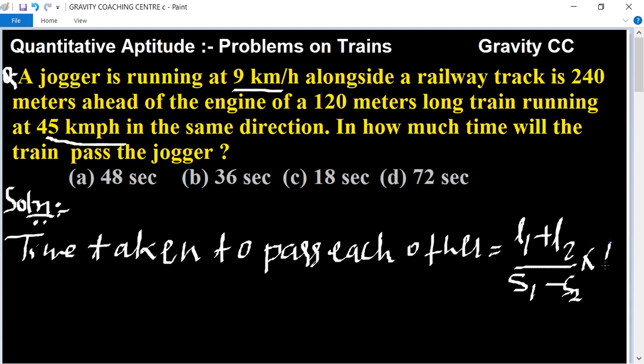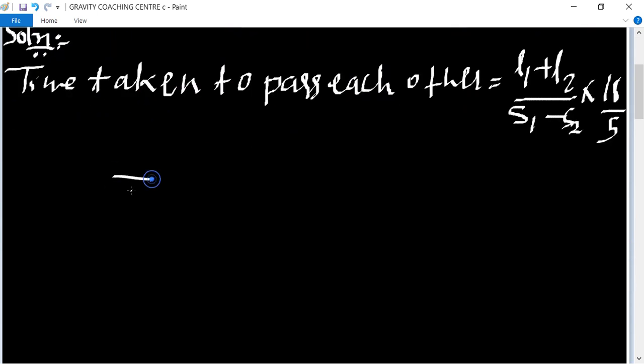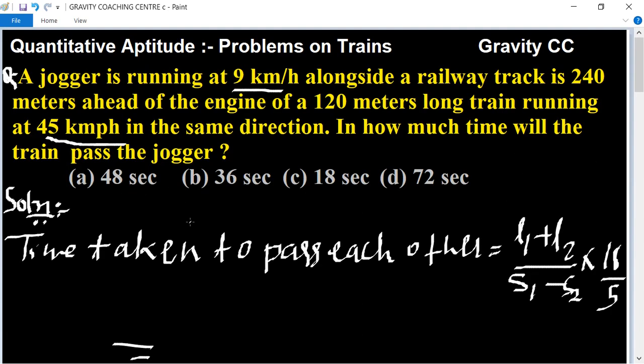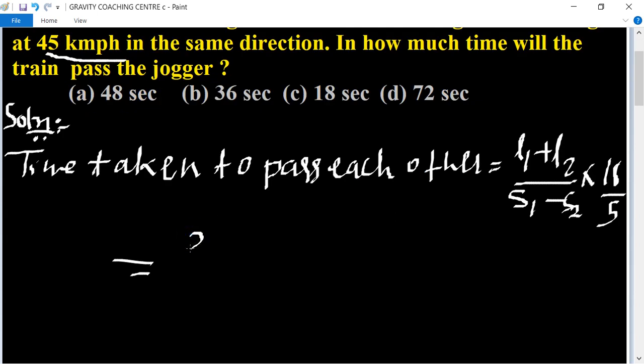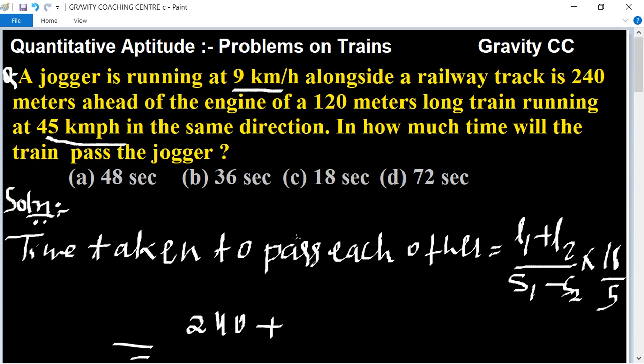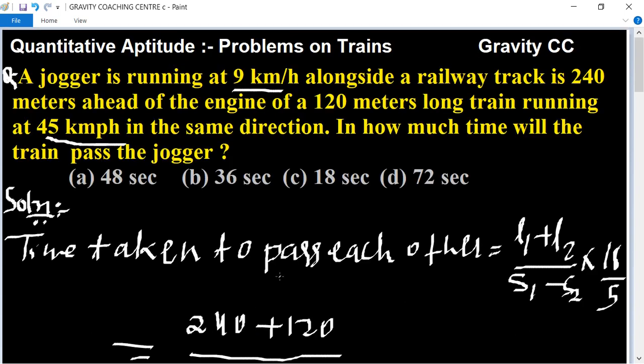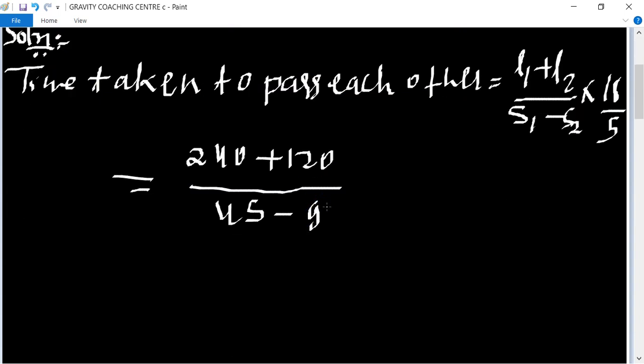Into 18 upon 5. And now put all the values. Length 1 is 240 plus length 2, the length of the train, 120 upon 45 minus 9 into 18 by 5, equal to